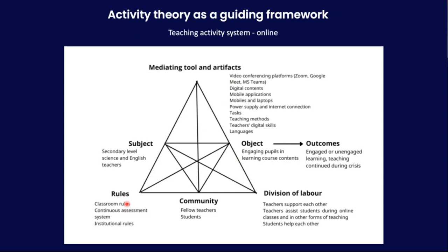Rules include, for example, classroom rules or continuous assessment systems, institutional rules. As a community, there are fellow teachers and students. Division of labor refers to roles and relationships — sometimes vertical, sometimes horizontal. For example, if teachers support each other, it's a horizontal role; but teachers assisting students is a vertical division. This is the teaching activity system which I have modeled for my study.